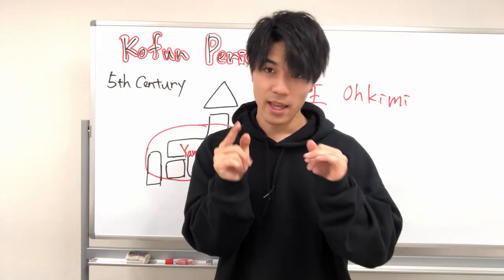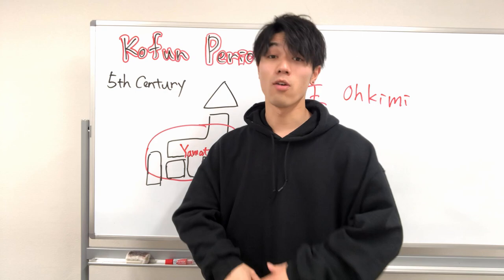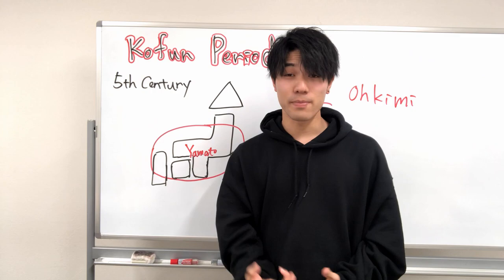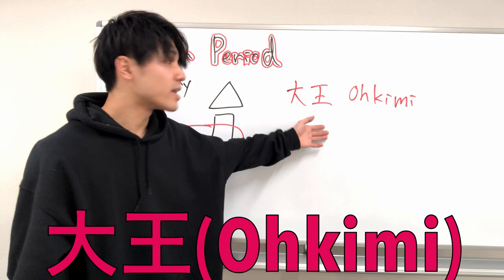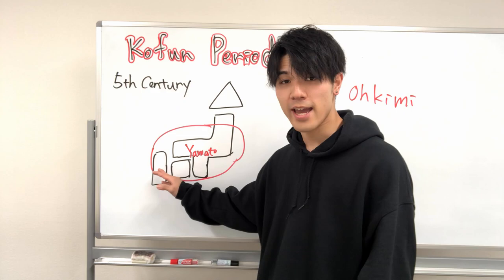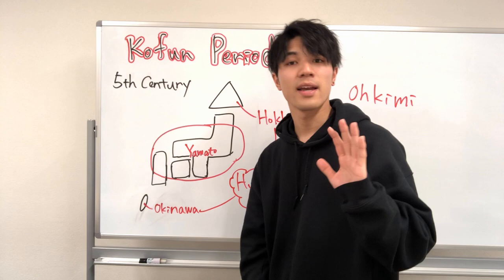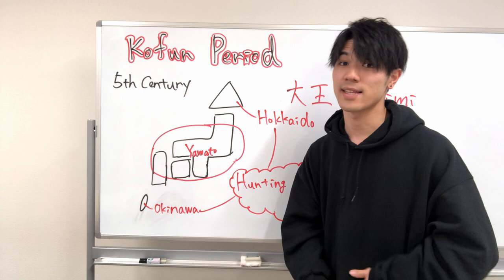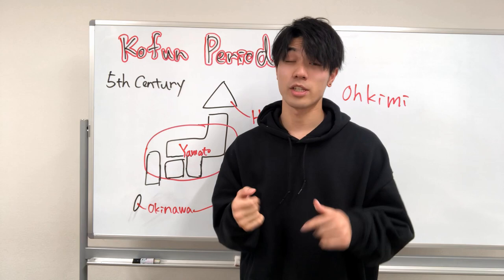In the fifth century, the Yamato Administration had expanded its influence over a large part of Japan from the west to the east. Its king became more powerful and called himself Okimi, meaning 'great king.' He conquered the southern part of Kyushu and the southern part of Tohoku. Yet in Hokkaido and Okinawa, people still lived in the same way as during the Jomon period — a hunting and gathering economy.